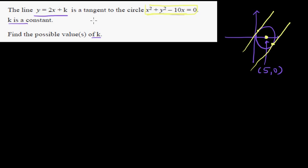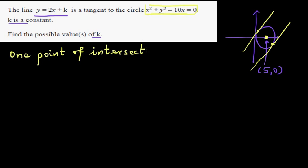When there is only one point of intersection between the line and the graph, you determine that b squared minus 4ac equals 0. If there are two points of intersection, b squared minus 4ac is greater than 0. And if there is no point of intersection, b squared minus 4ac is less than 0. Since the line is a tangent, this is going to be 0.